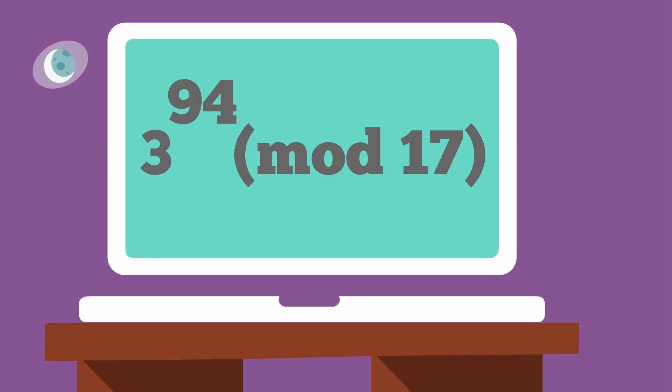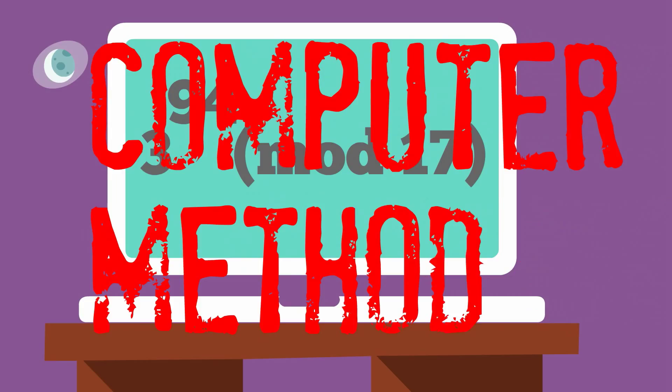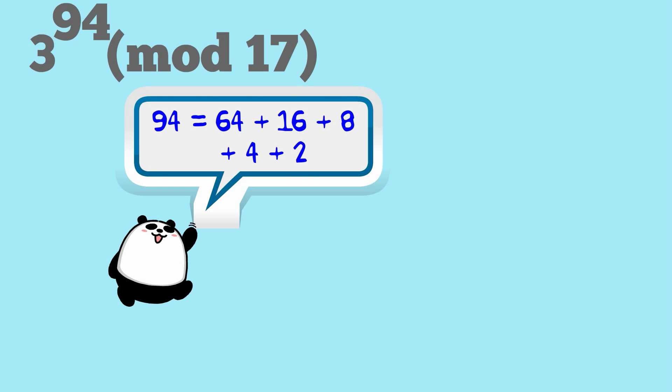So how do we do this first problem? Well, I'm going to use what I call the computer method. And that's because it's a very formal sort of way of doing it, very well suited to programming if you're a computer scientist. And we start by recognizing that 94, in fact any number, can be represented as the sum of distinct powers of 2.